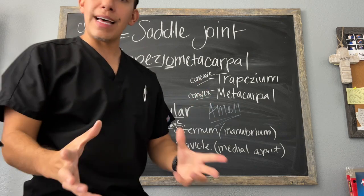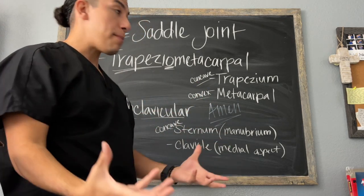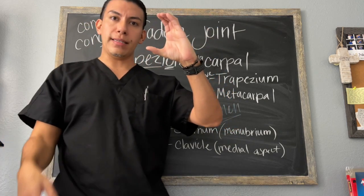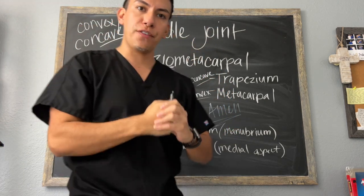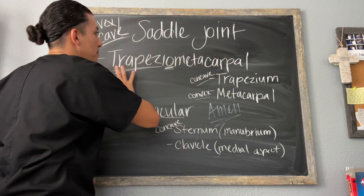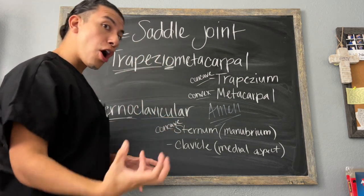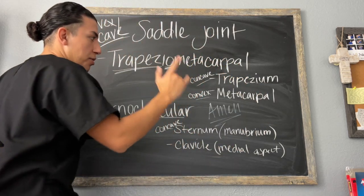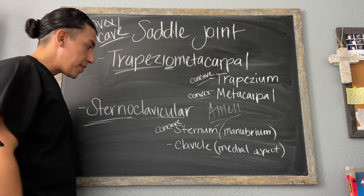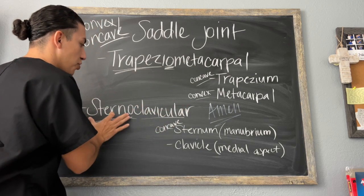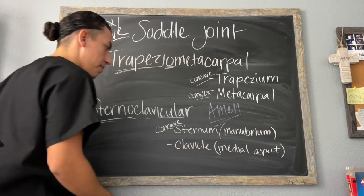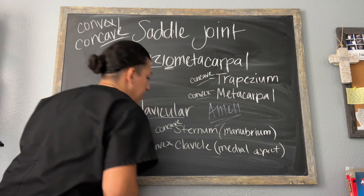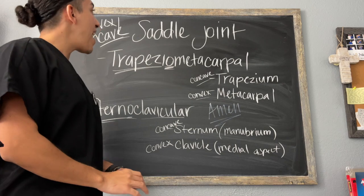Saddle joints are a tough joint to remember, but what helps is knowing 'concave' means cave — it caves in, and the convex surface fits within it. The thumb joint is the trapezio-metacarpal — it can also be called the carpometacarpal joint — where the trapezium articulates with the metacarpal of the thumb. We also have the sternoclavicular joint: the manubrium of the sternum is the concave surface, and it articulates with the convex surface of the medial aspect of the clavicle.